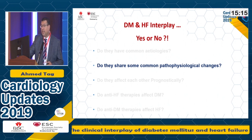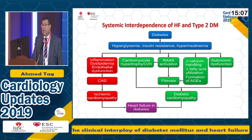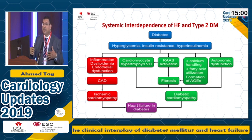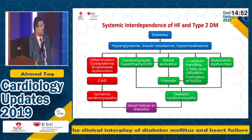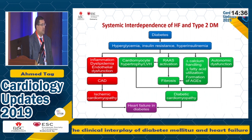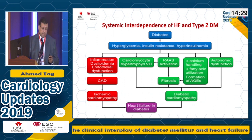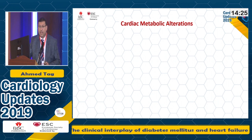Do they share common pathophysiological changes? Astonishingly, yes. Diabetes may lead to diabetic cardiomyopathy and share in the prognosis and evolution of heart failure in patients with or without ischemic heart disease. Hyperglycemia, insulin resistance, and hyperinsulinemia might lead directly to coronary artery disease and ischemic cardiomyopathy via inflammation, dyslipidemia, and endothelial dysfunction, and indirectly via autonomic dysfunction, abnormal calcium handling, increased fatty acid utilization, RAS activation, and LVH to diabetic cardiomyopathy.